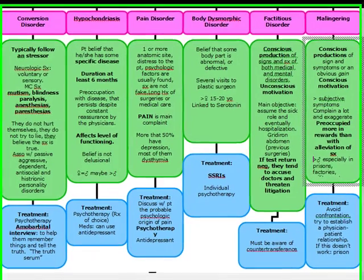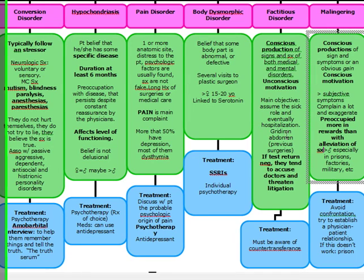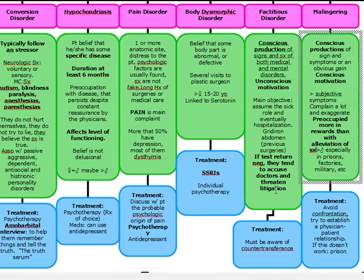Malingering involves a primary gain and a conscious motivation. It is usually seen in men in prisons, factories, and the military — for example, to get out of prison or avoid military service. These patients are more preoccupied with rewards than symptom alleviation, as opposed to factitious disorder where the motivation is unconscious. In factitious disorder, patients accuse doctors and threaten litigation when tests return negative.